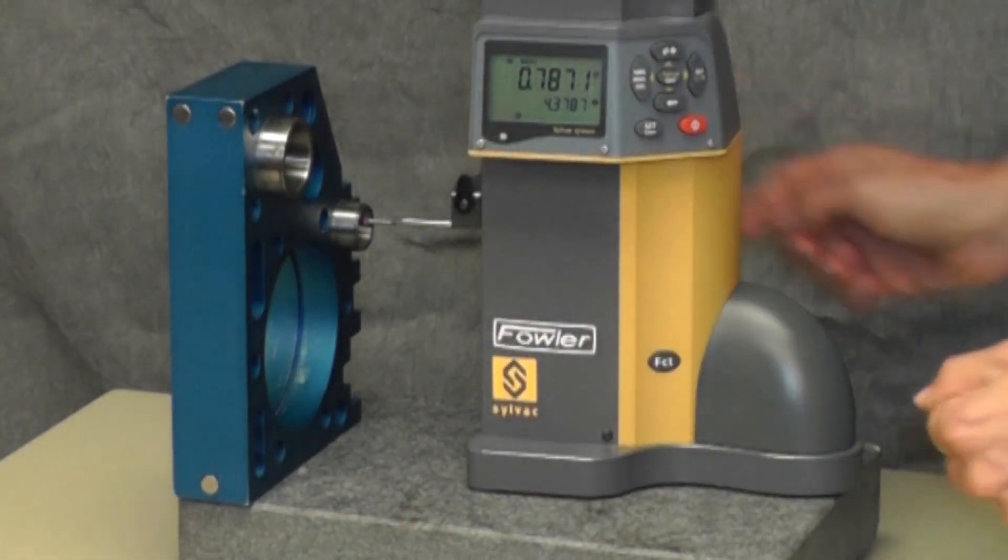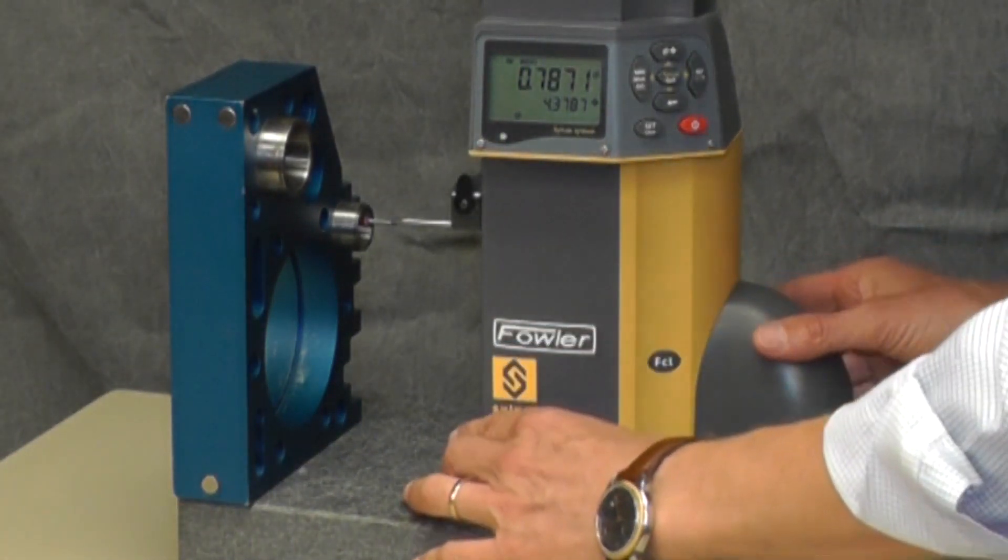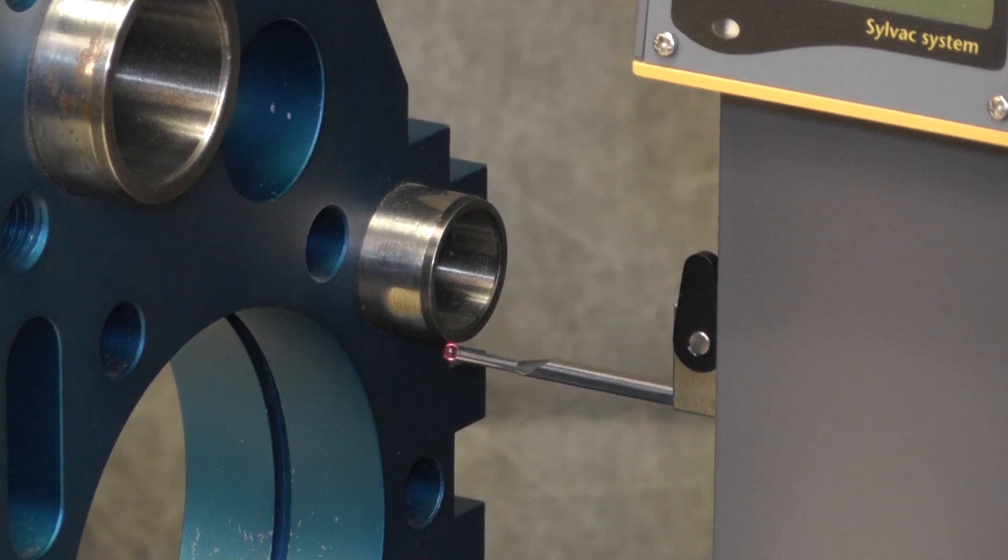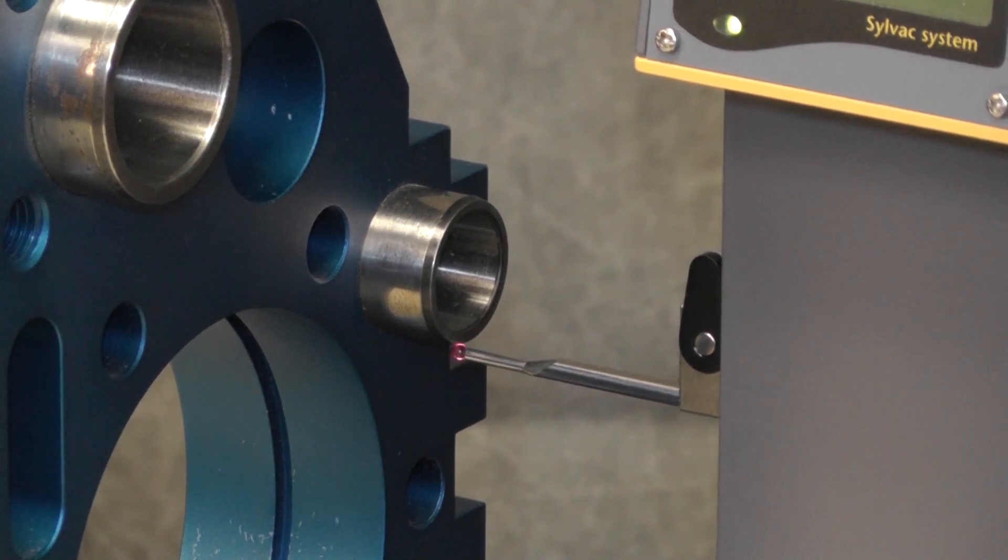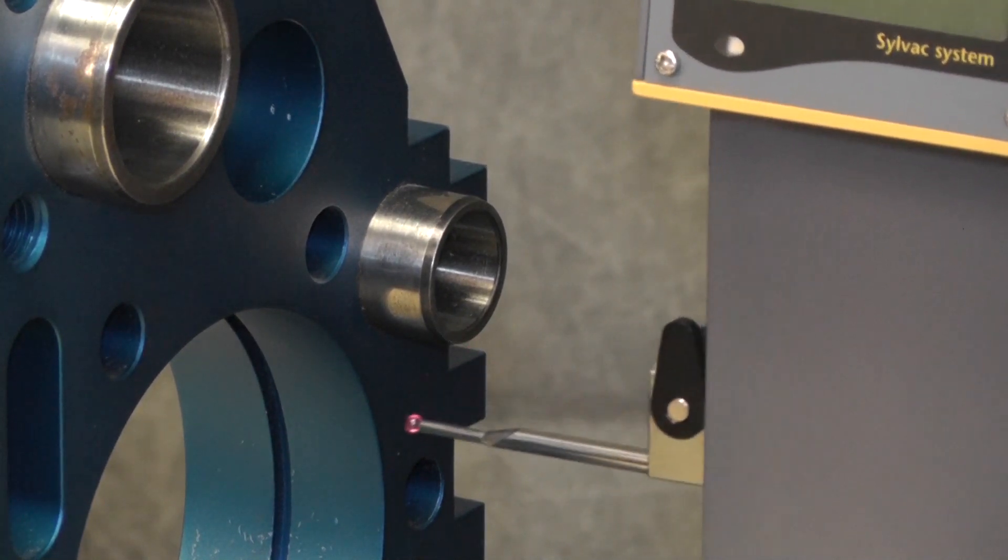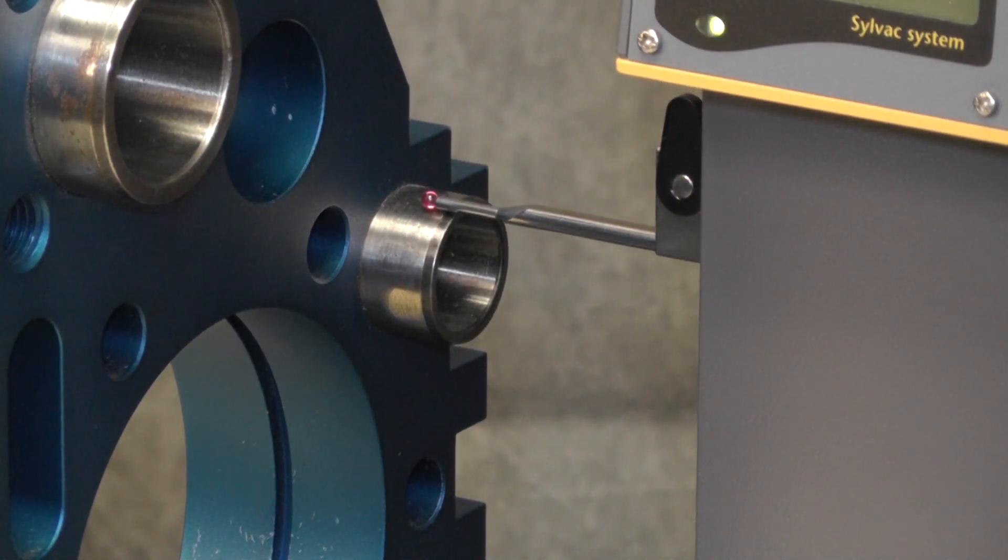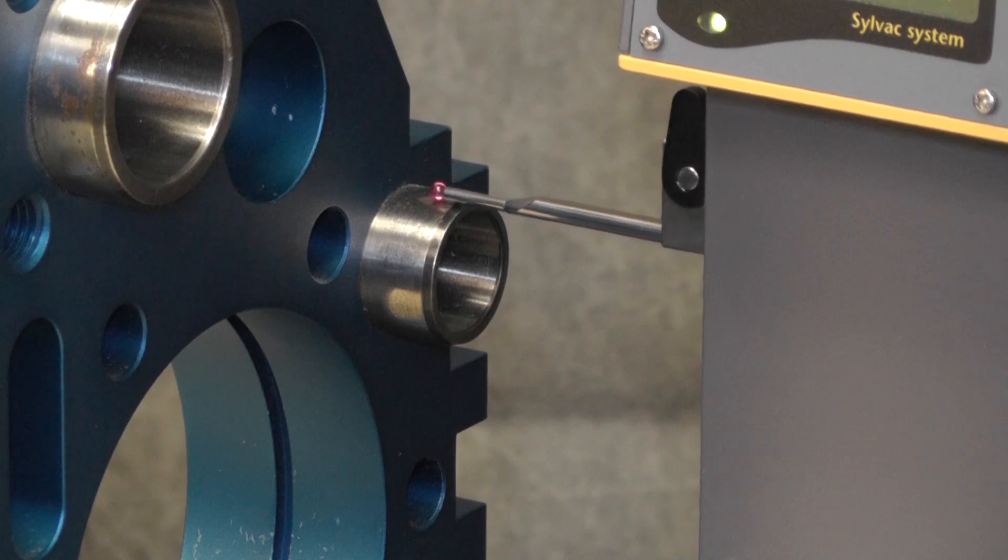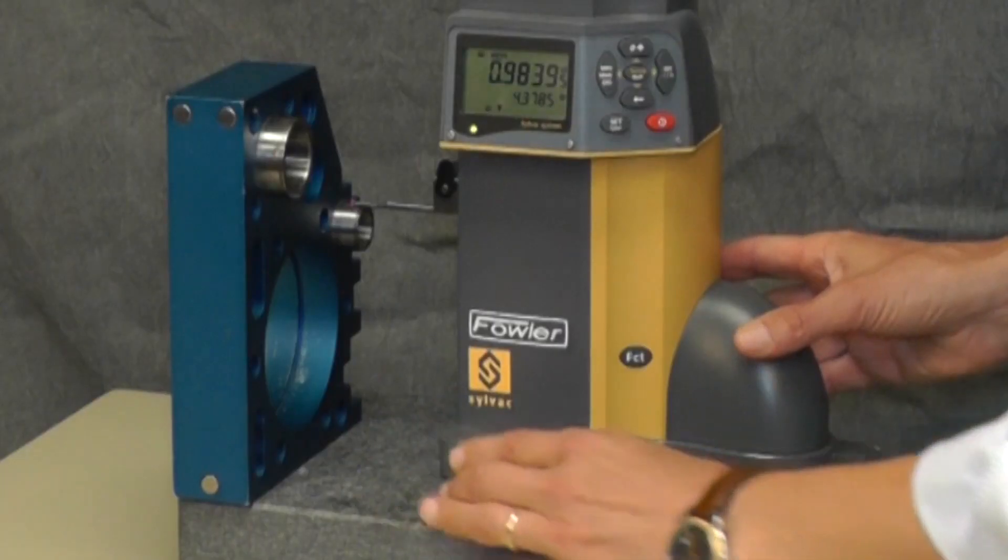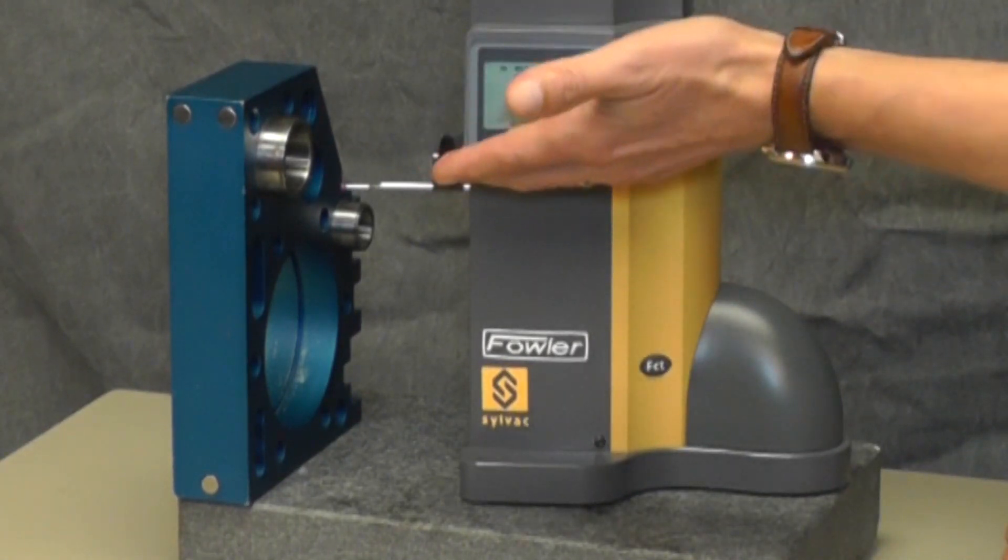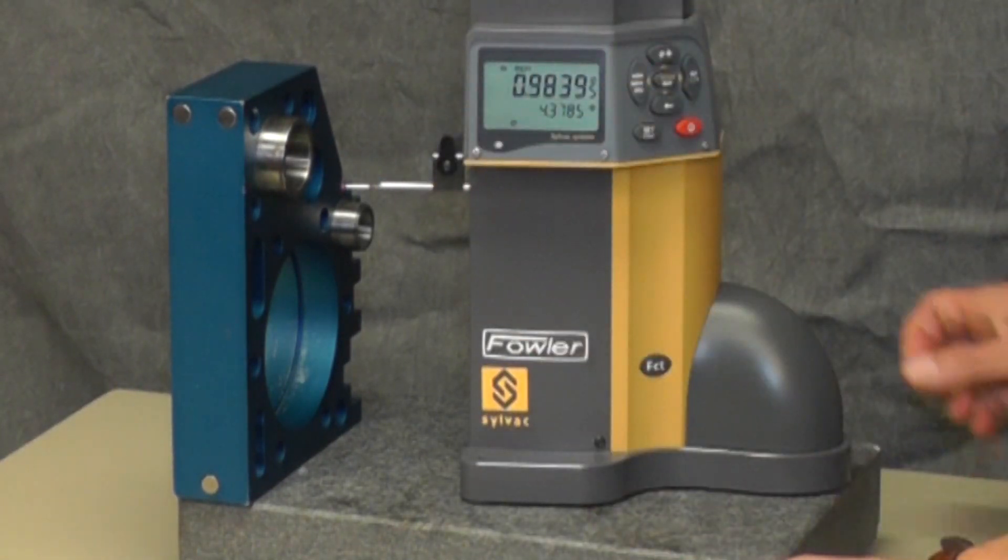To measure external bores, I will do exactly the same. I touch, I sweep, I touch on the top and I sweep. And I have on the first line my diameter, on the second line my center.